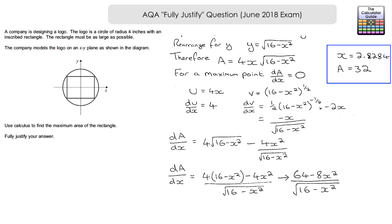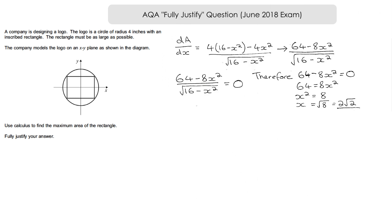Since dA/dx = 0 at a maximum, we set (64 − 8x²) / √(16 − x²) = 0. The zero must come from the numerator, so 64 − 8x² = 0. Solving gives x = √8 = 2√2. We take the positive value since x represents a length. As a decimal, 2√2 ≈ 2.8284, which matches the calculator result — good confirmation.